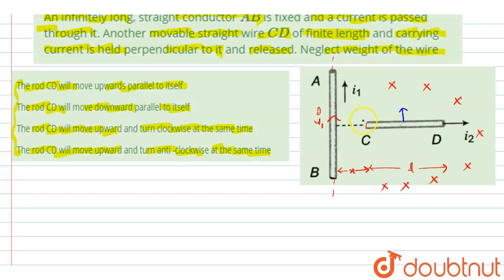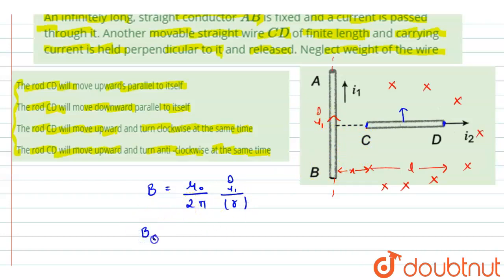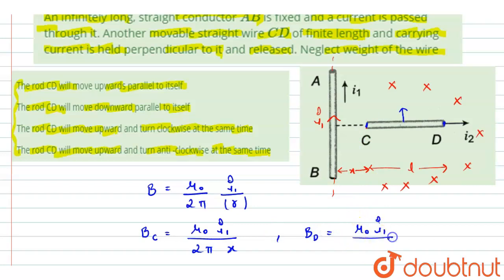We have two points on conductor CD: point C and point D. The magnetic field generated by current I1 is given as B = μ₀/2π × I1/R, where R is the distance of the conductor from the infinitely straight wire. The magnetic field at point C is μ₀I1 / (2πX), since point C is at distance X. The magnetic field at point D is μ₀I1 / (2π(X+L)), since point D is at distance X plus L.